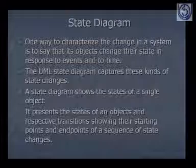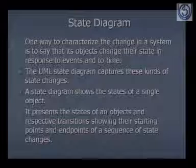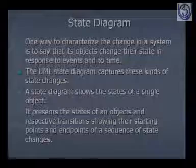A state diagram shows the states of a single object — this is important to remember. For each object, you define various states: what possible events can occur, and what actions need to be taken when those events occur. It presents the states of an object and the transitions, showing the starting points and end points of a sequence of state changes — from the initial state through all transitions to the final state.